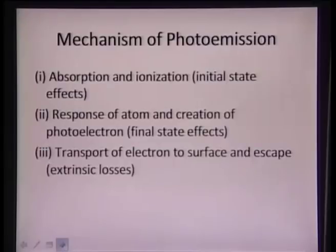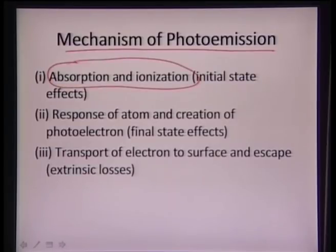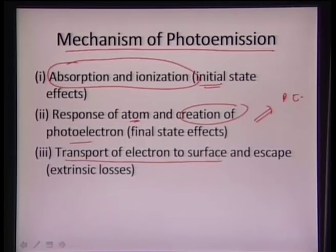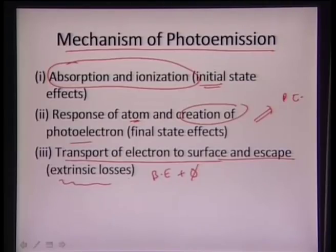Photoemission is described as a three-step mechanism: first, absorption and ionization creating the initial core level hole; second, emission of the photoelectron as the atom responds; and third, transport of the electron to the surface and escape — overcoming the binding energy plus work function, with extrinsic losses from phonon and plasmon interactions.